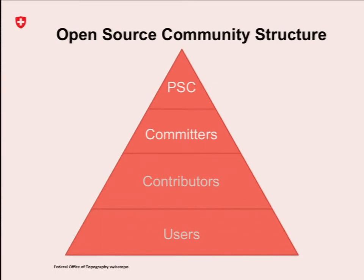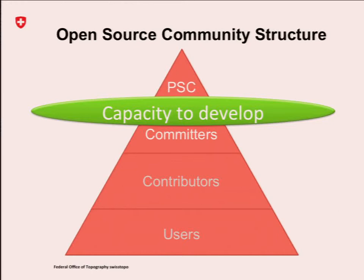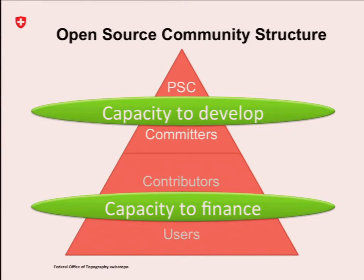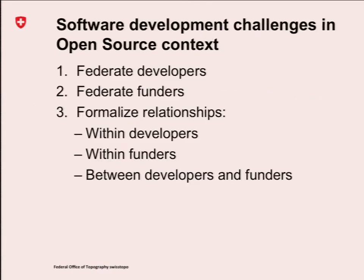In an open source context, we have this kind of structure: users on the bottom and the project steering committee on the top. Basically, we have the capacity to develop on the top, and the capacity to finance on the bottom. So how can we merge these two worlds? How can users finance the work of developers? The challenge was to federate the developers on one side, federate the founders on the other side, and formalize the relation between the founders and the developers. As a government agency, I need to have a contract — I can't simply say 'please develop, I give you money, and that's it.' We need to have something formalized.